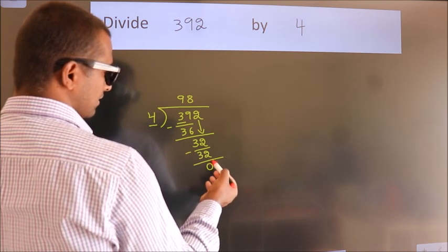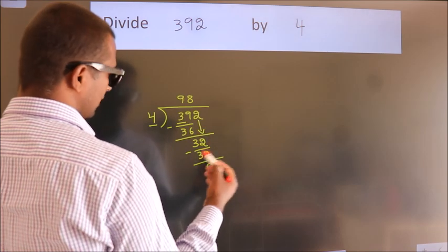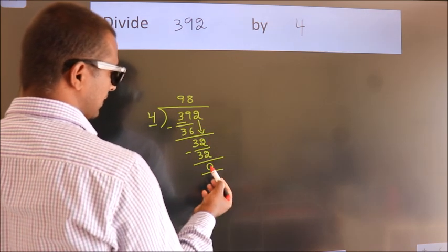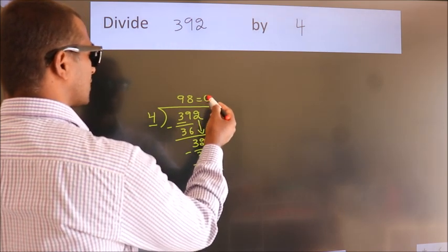After this, no more numbers to bring it down, and we got remainder 0. So this is our quotient.